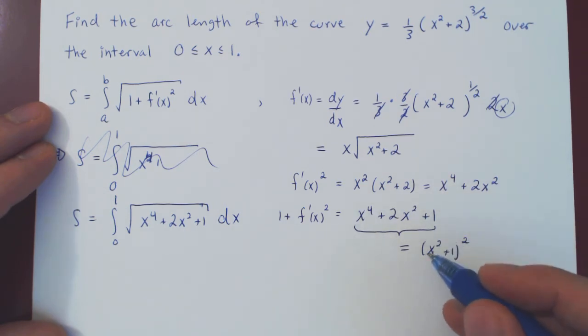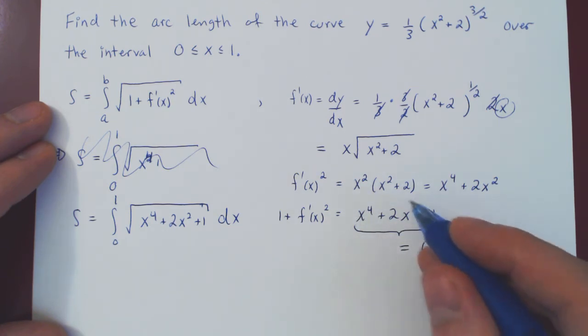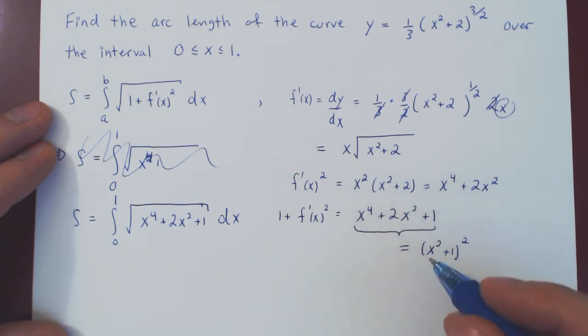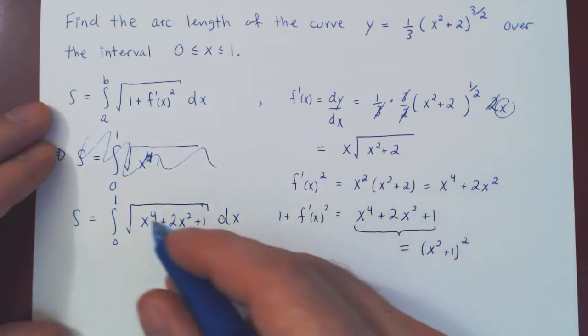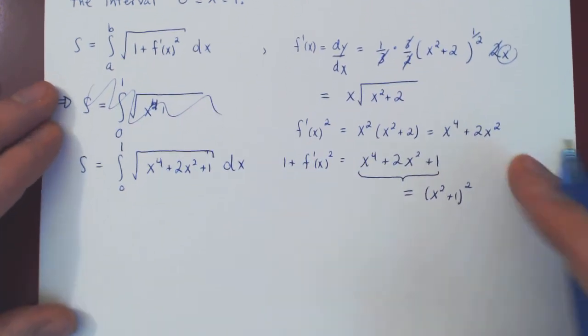If you square this, x squared times itself x to the 4 plus x squared plus x squared 2x squared plus 1 times 1, 1. So it's actually a perfect square. So the square root will simply cancel out.